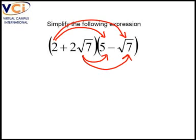So in total, we will have four arrows. Number one, number two, number three, and number four. And each arrow indicates multiplication.